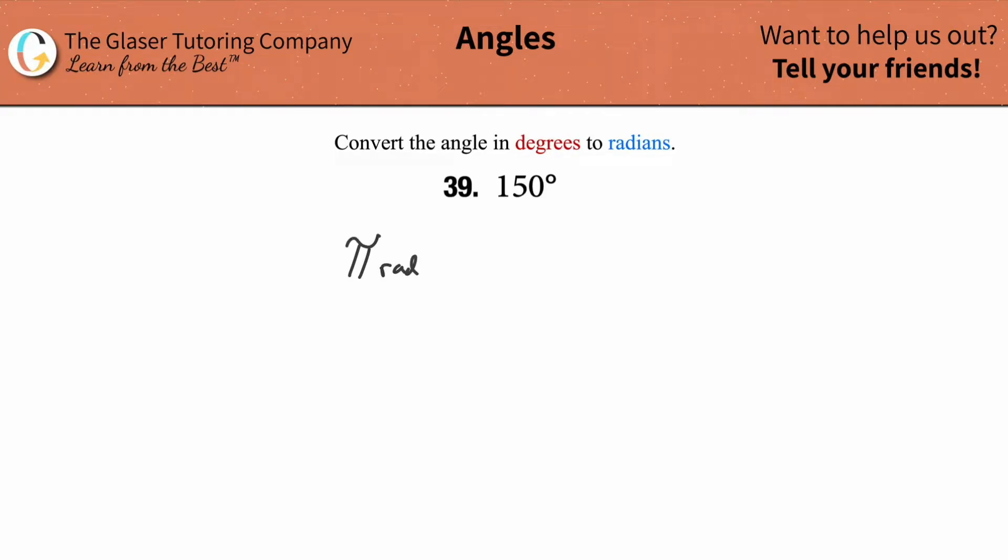So pi radians, or about 3.14 radians, is equivalent to 180 degrees.